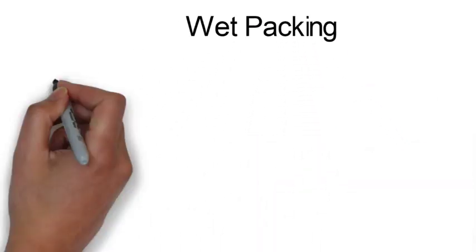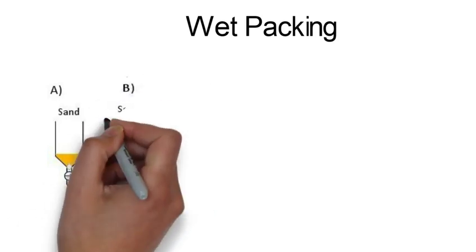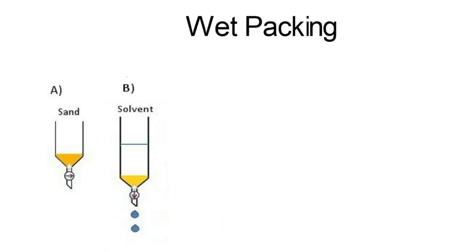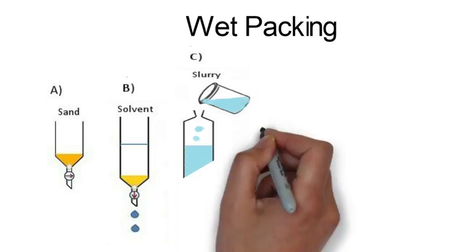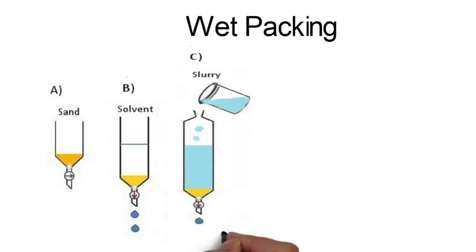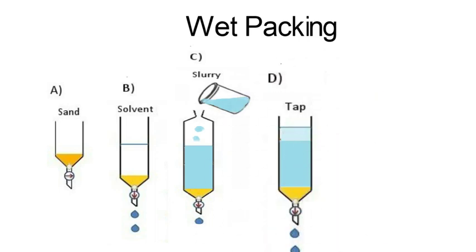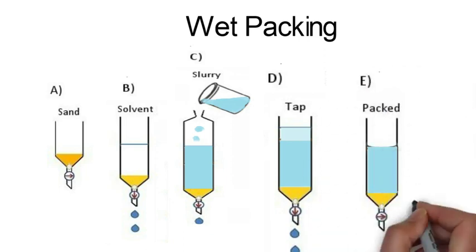Next part is wet packing, the second type of packing. In wet packing, firstly take sand or cotton plug. After that, add a solvent, open the cock, and let the solvent drain out so that air bubbles will be removed. After that, add a slurry, which is nothing but silica plus solvent. Tap it, and after tapping, the column will be ready.